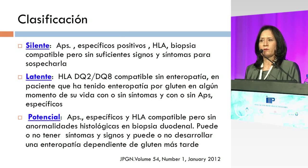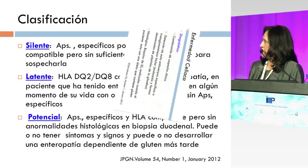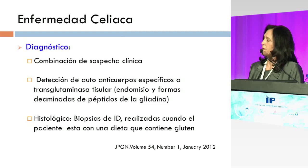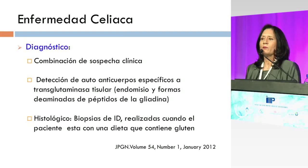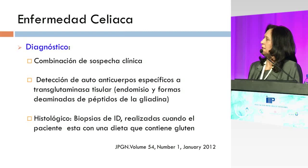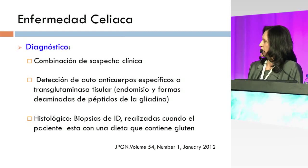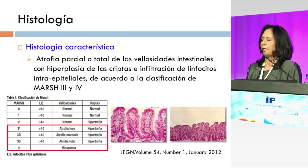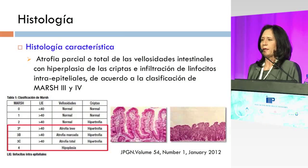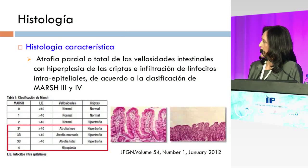El diagnóstico lo vamos a hacer básicamente con una combinación de la sospecha clínica en estos pacientes y la detección de anticuerpos específicos como los antitransglutaminasa predominantemente, y en algunos pacientes requerirán una biopsia del intestino delgado, en donde se va a poder encontrar la alteración histológica característica, que se muestra como una atrofia completa o parcial de las vellosidades intestinales, según la clasificación de MARSH 3-4.